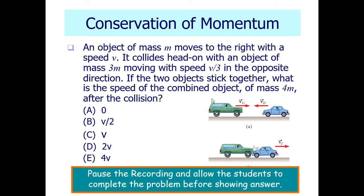We're going to start by seeing how well you remember what you did on Friday. So here's an example. Conservation momentum question. An object of mass m moves towards the right with a speed of v. It collides head-on with an object of mass 3m moving with a speed of v over 3 in the opposite direction. If the two objects stick together what is the speed of the combined object of mass 4m after the collision? Go ahead and hit the pause. Let you guys work through that. We'll come back once you finish it up.